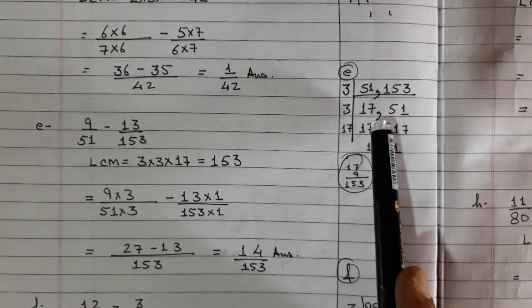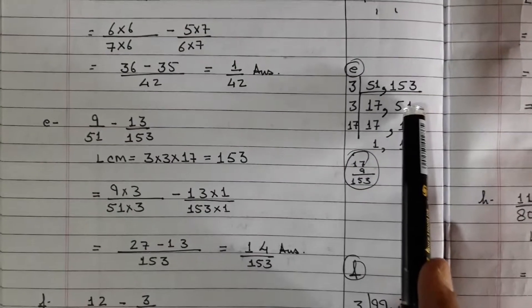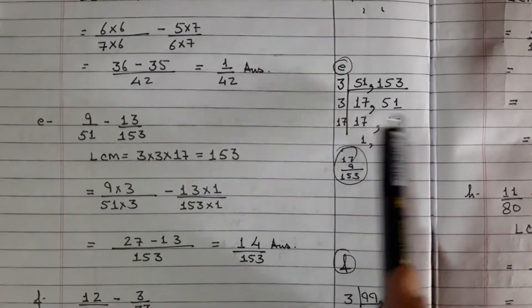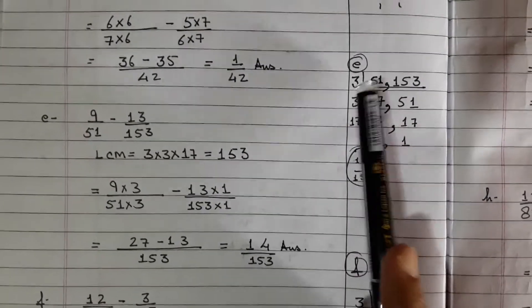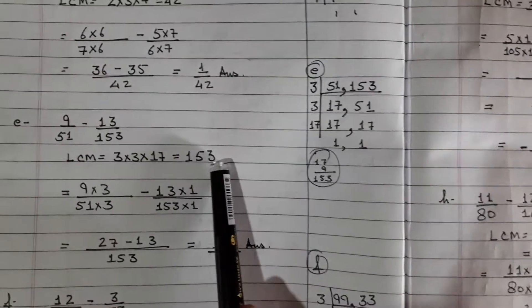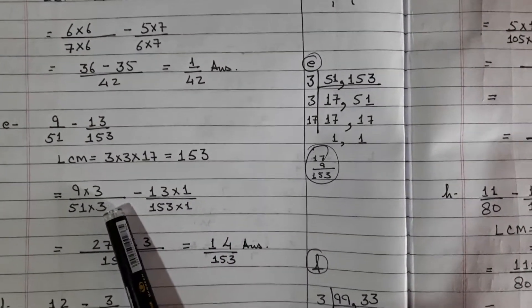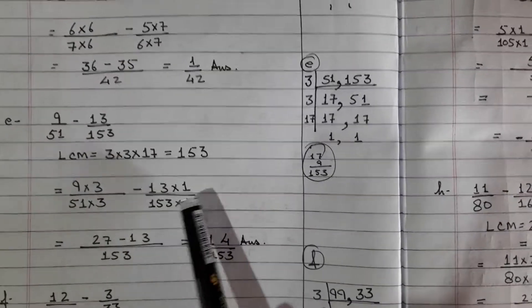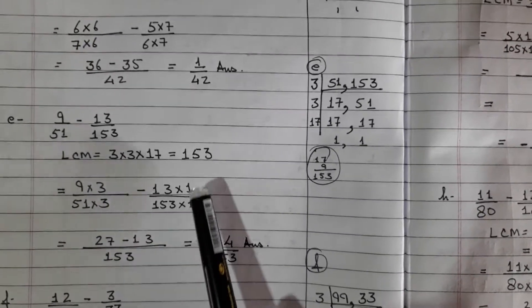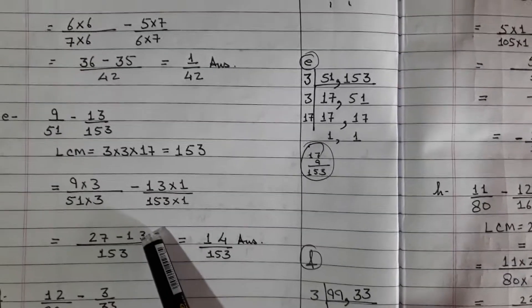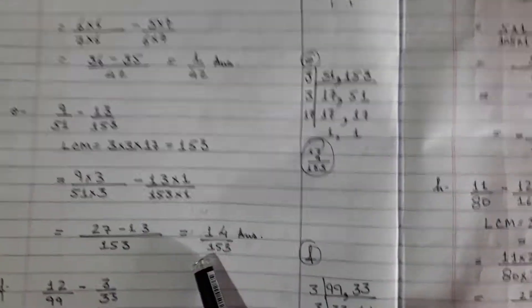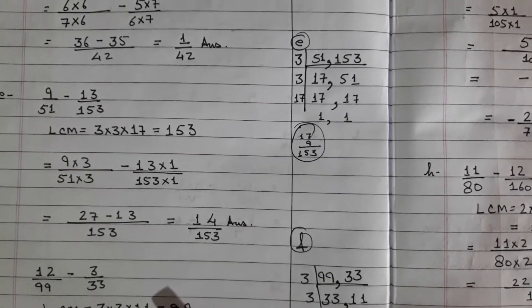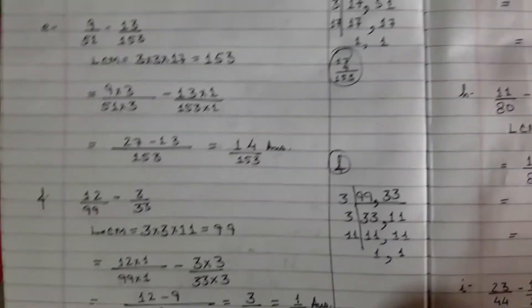Now look at this. 3×17s are 51 and 3×51s are 153. Keep on dividing. 17×3×3×3. So 153 is your LCM. To make it 153, 51 multiplied by 3 and 153 is already there. So 9×3 is 27 and 13×1 is 13. 27 minus 13, 14 over 153 is your answer. No common factor can divide both of these. But divisibility tests are very, very important. The next exercise I will give you will be on divisibility tests.